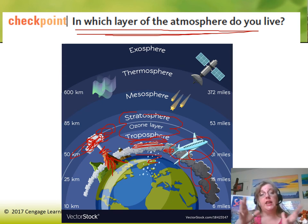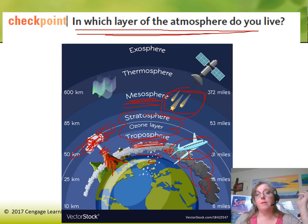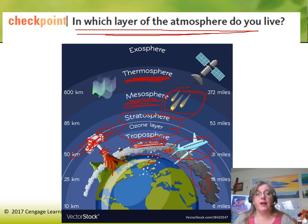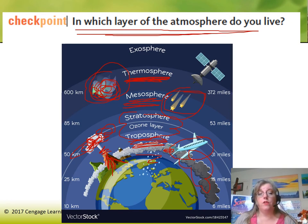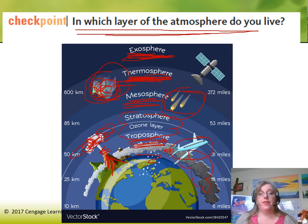The mesosphere is where meteorites burn up — there are always meteorites coming at our planet and usually they burn right up there. The thermosphere is the hottest layer and contains a sublayer called the ionosphere, where the northern and southern lights are created. The exosphere is the outermost layer where molecules are so thin they're almost non-existent — this is where most of our satellites fly.